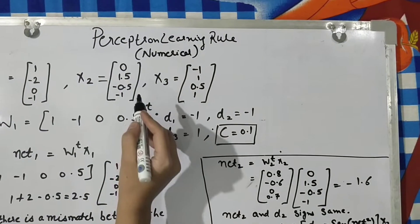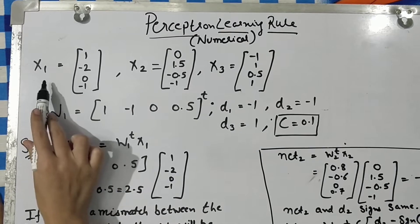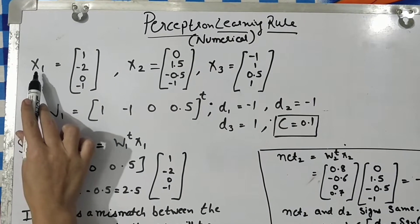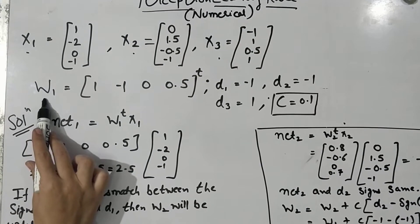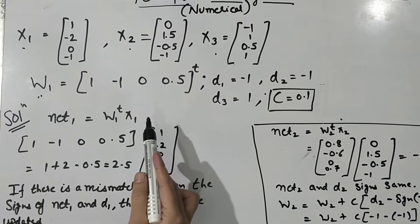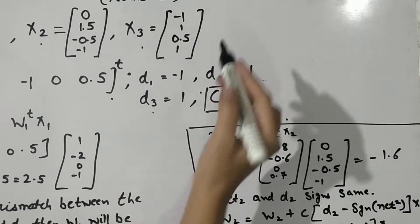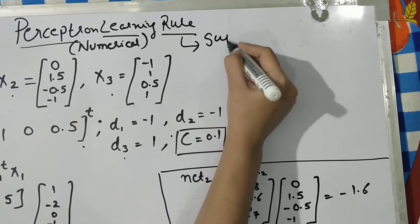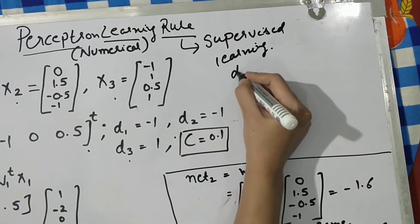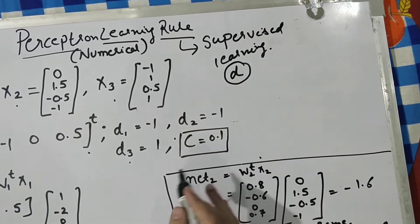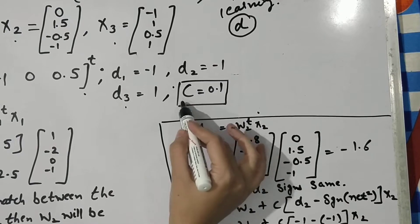We are going to learn a numerical based on the perceptron learning rule. A few things are initially given: the input values x1, x2, and x3 as a matrix, the initial weight vector, and the desired output values d1=-1, d2=-1, and d3=-1. After computing, you have to update the weight values based on the actual output.